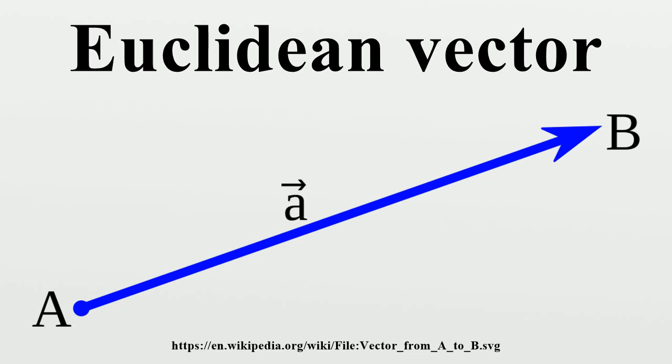Here the point A is called the origin, tail, base, or initial point. Point B is called the head, tip, endpoint, terminal point or final point. The length of the arrow is proportional to the vector's magnitude, while the direction in which the arrow points indicates the vector's direction.